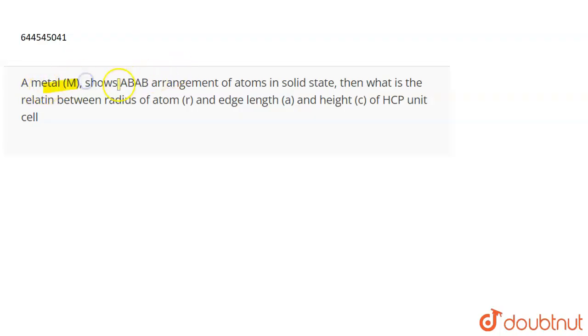The question is: a metal M shows ABAB arrangement of atoms in solid state. Then what is the relationship between the radius R of an atom and edge length A and height C of HCP unit cell?